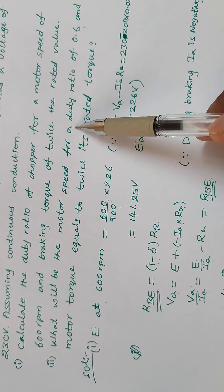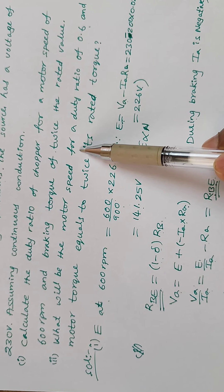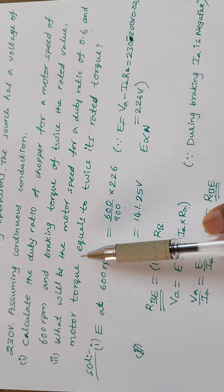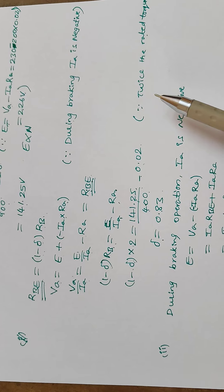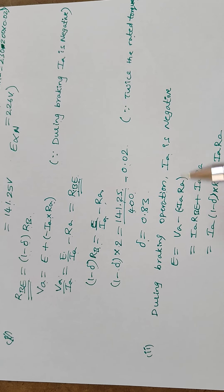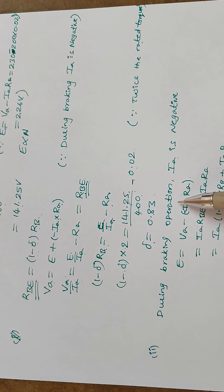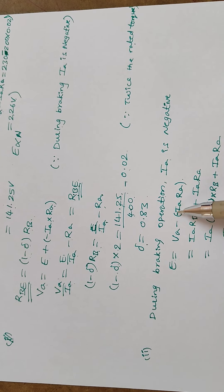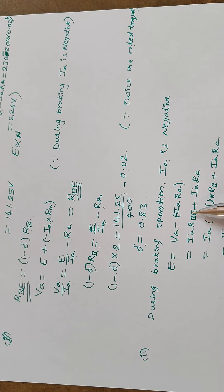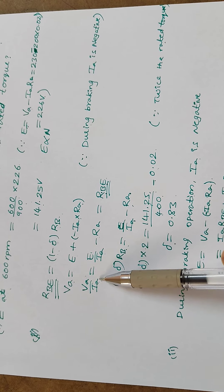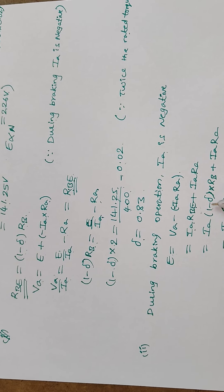For the second question: with duty ratio 0.6, we need to find the EMF first, then get the corresponding speed. The current is twice the rated value. During dynamic braking, Ia is negative, so E equals Va plus Ia times Ra. Va equals Ia times Rb_eff, where Rb_eff equals (1 minus δ) times Rb.